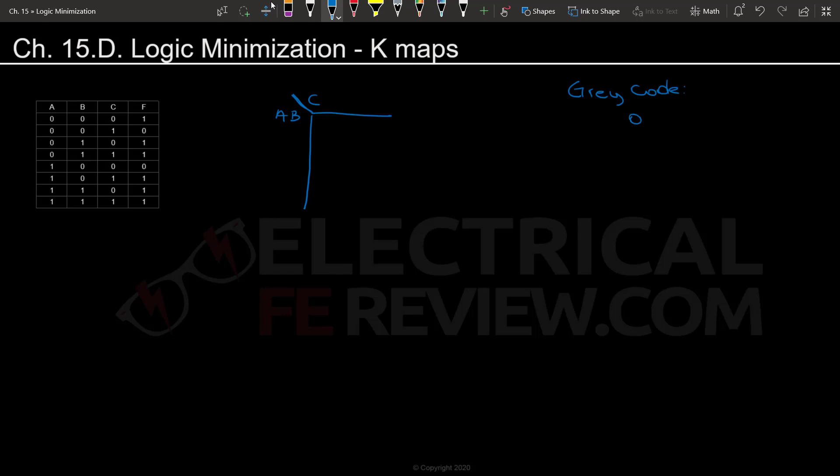So we're going to have 00, 01, 11, 10. So right here these are switched, and that's just how it is for gray code so that it doesn't change two at a time.